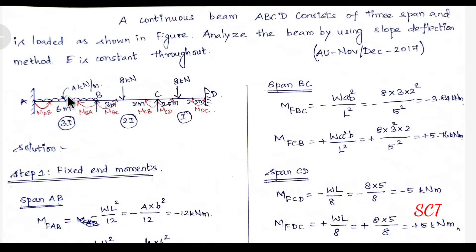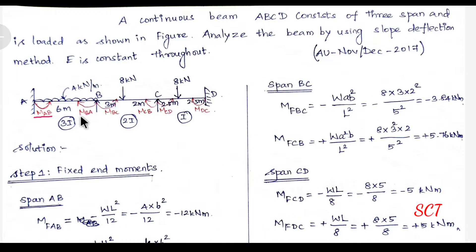The loading includes a UDL load of 3 kN/m plus unsymmetrical loading, that is 3m and 2m distances. The first span has a central load. We need to note this moment - we need to note this moment carefully, note it in red pen.